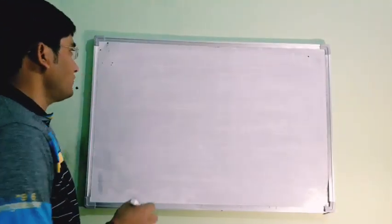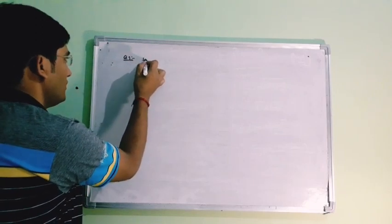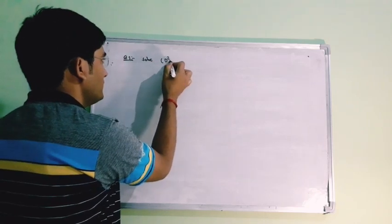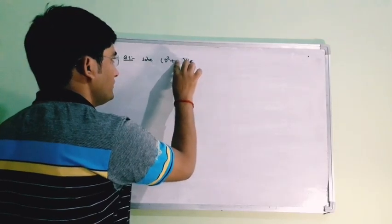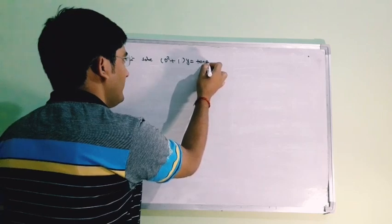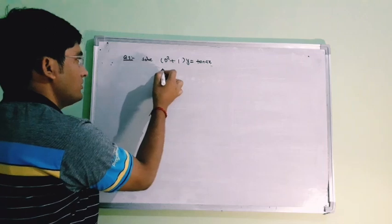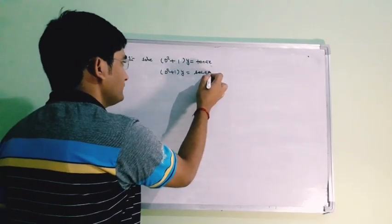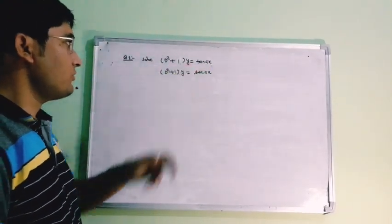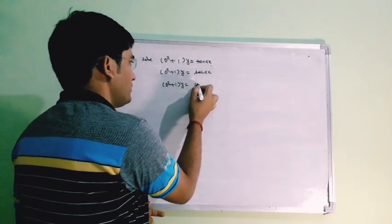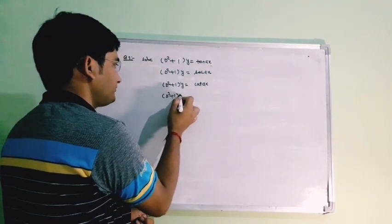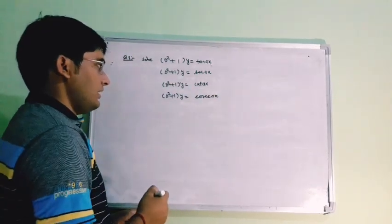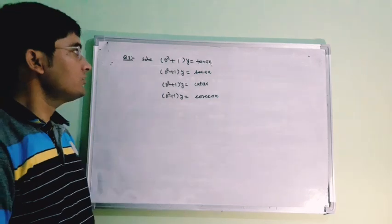Welcome again to this lecture on linear differential equations with constant coefficients. In this lecture, I am going to solve questions in which we do not have any direct formula, and we will use the general method for solving the particular integral. We will solve questions such as (D²+a²)y = tan(ax), (D²+1)y = tan(x), (D²+1)y = sec(ax), and find particular integrals of these types.